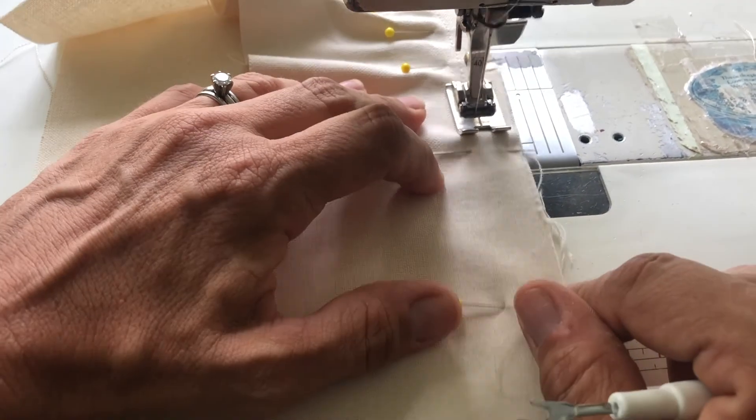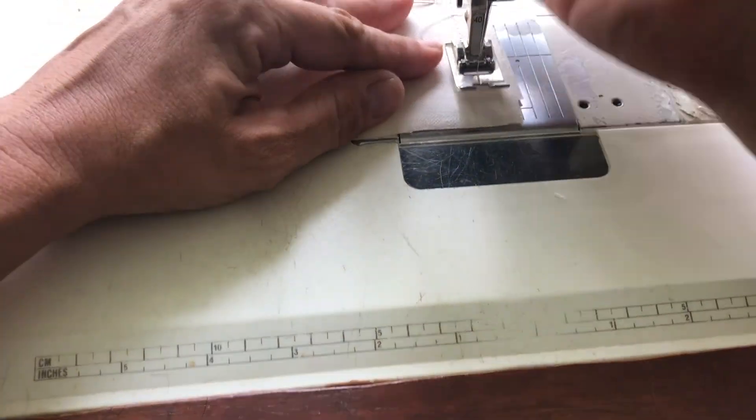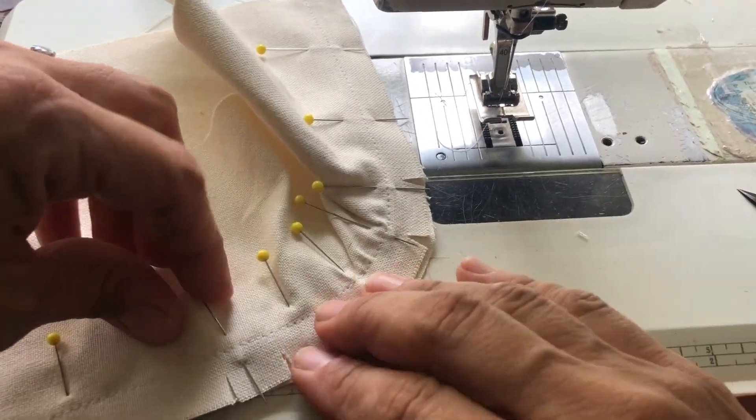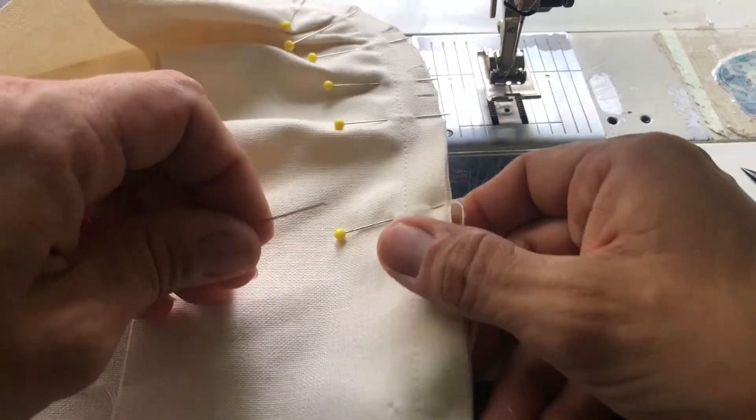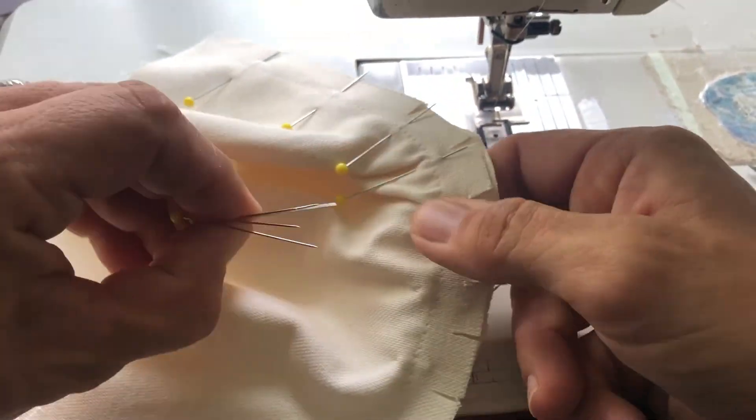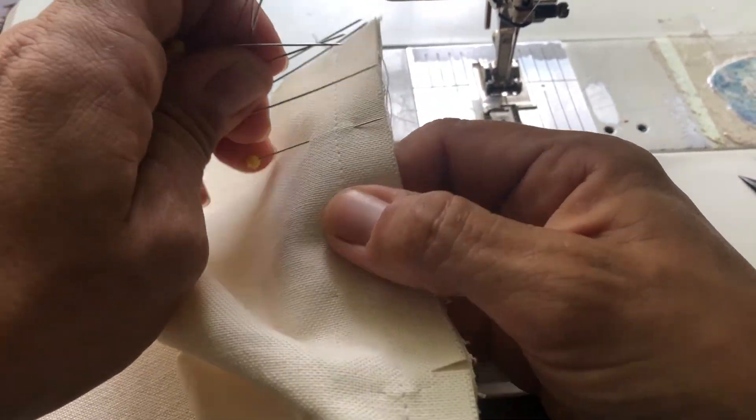So that's how you ease around a corner. I'll do another one because that one was actually pretty easy. Let me show you how this looks when we take it out, and then we'll take it to the ironing board and I'll show you how to press it.